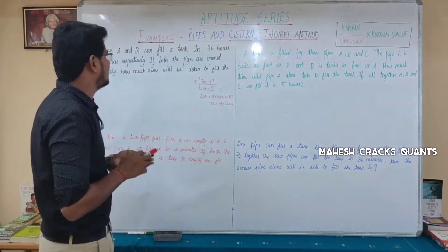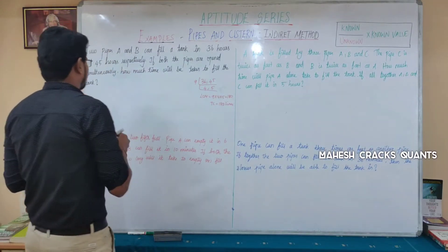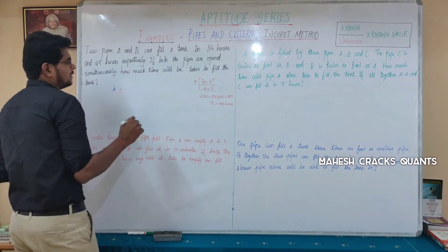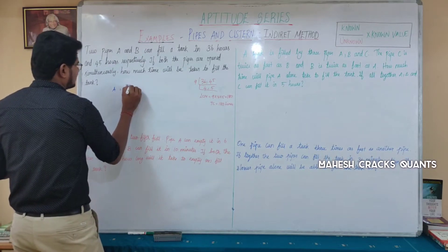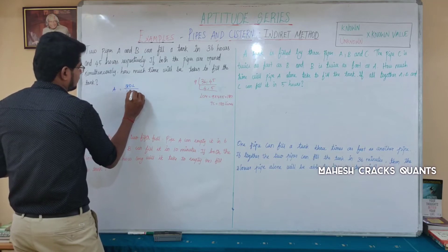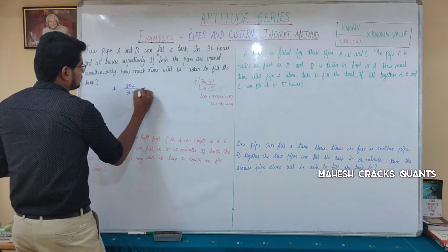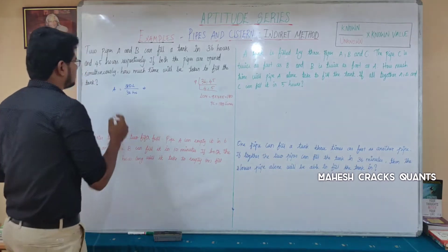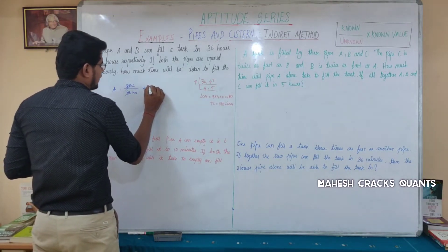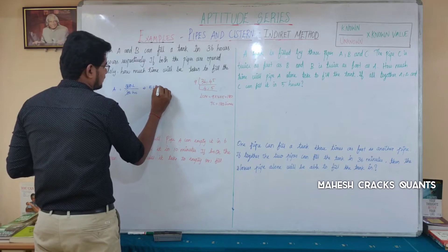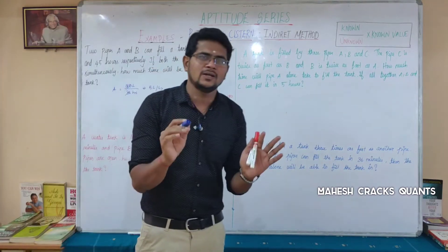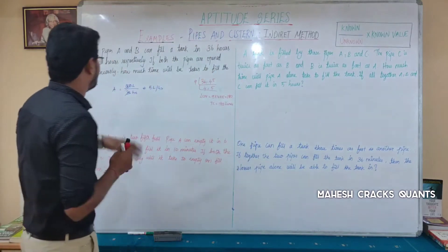Total capacity is 180 litres. Pipe A fills 180 litres in 36 hours. So A fills 5 litres per hour — that is 5 times of 36 is 180, so A fills 5 litres per hour.